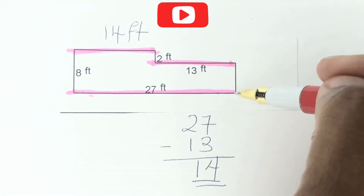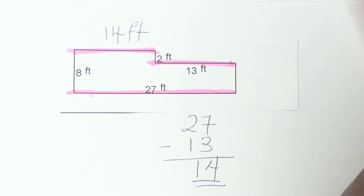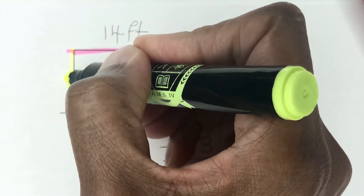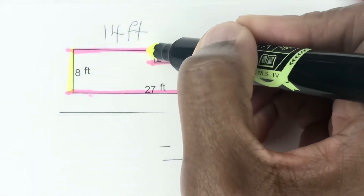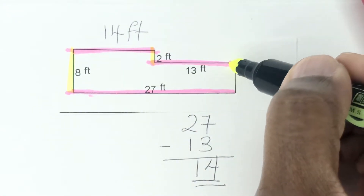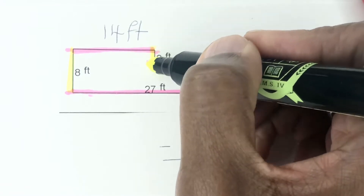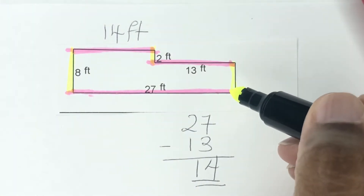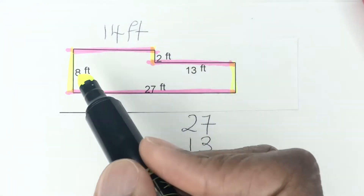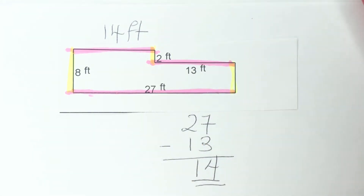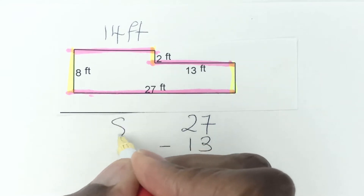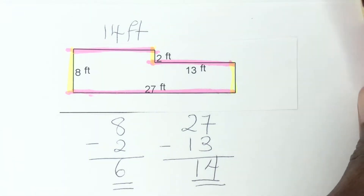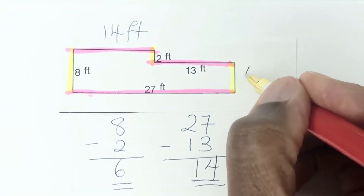We also have this missing vertical side here. The whole vertical side is 8 feet, and then we have this given one as 2. So 2 plus this missing vertical side is going to give us the total of 8. We're going to do another subtraction: 8 minus 2 gives us 6. So this missing side is 6 feet.